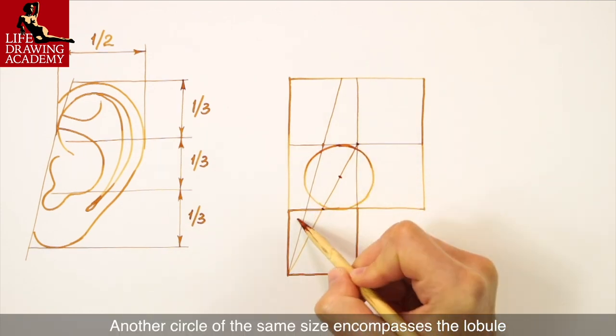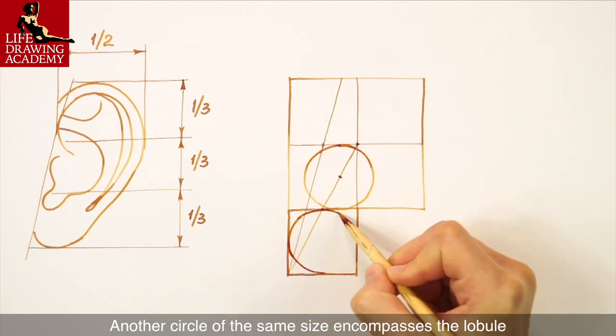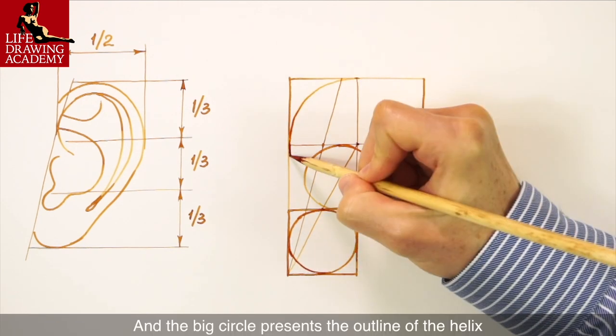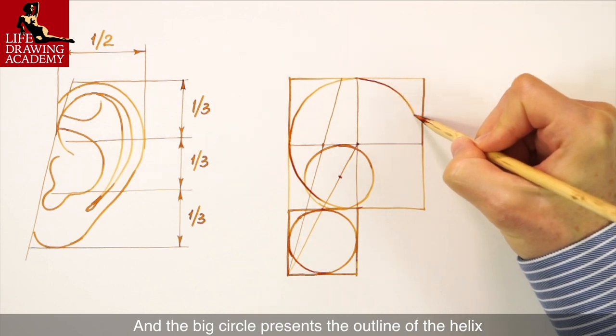Another circle of the same size encompasses the lobule. And the big circle represents the outline of the helix.